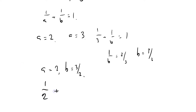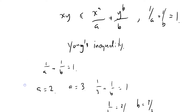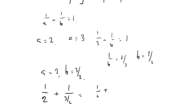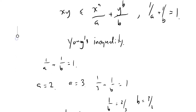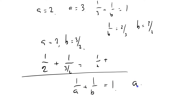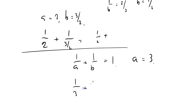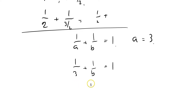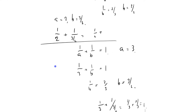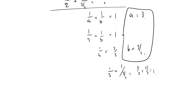Wait — 1/A + 1/B = 1/2 + ... I've made a mistake. Let me redo this. A = 3, so 1/3 + 1/B = 1, thus 1/B = 2/3, so B = 3/2. Check: 1/A + 1/B = 1/3 + 2/3 = 1. Good. So our values are A = 3 and B = 3/2.